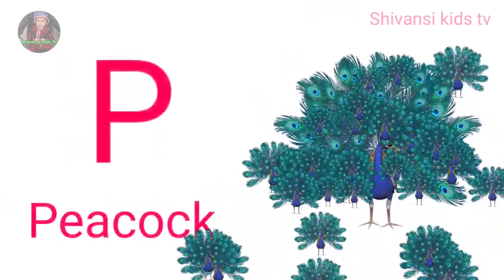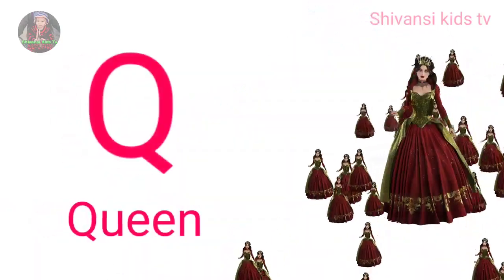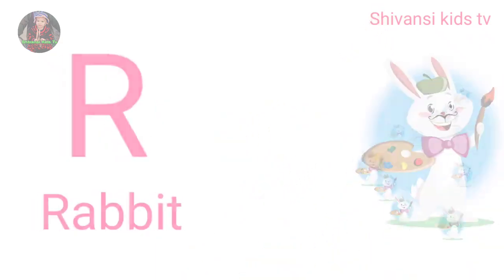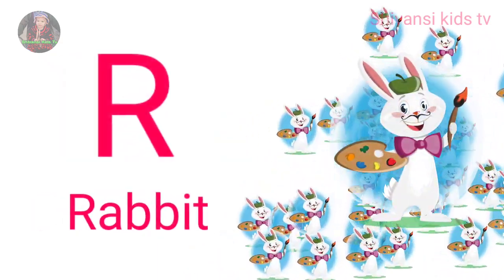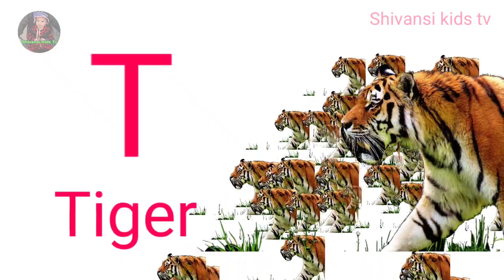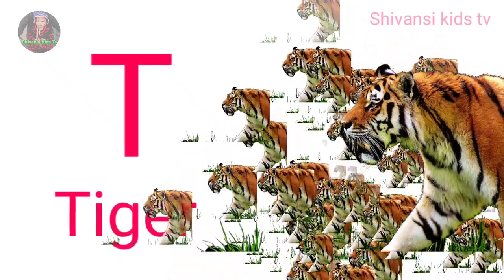O for orange, P for peacock, Q for queen, R for rabbit, S for sheep, T for tiger.